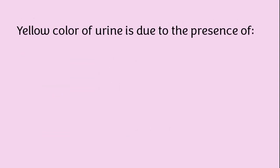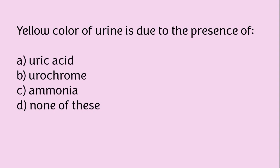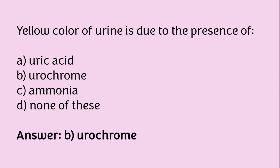Yellow color of urine is due to the presence of: uric acid, urochrome, ammonia, or none of these? The correct answer is option B. Yellow color of urine is due to the presence of urochrome.